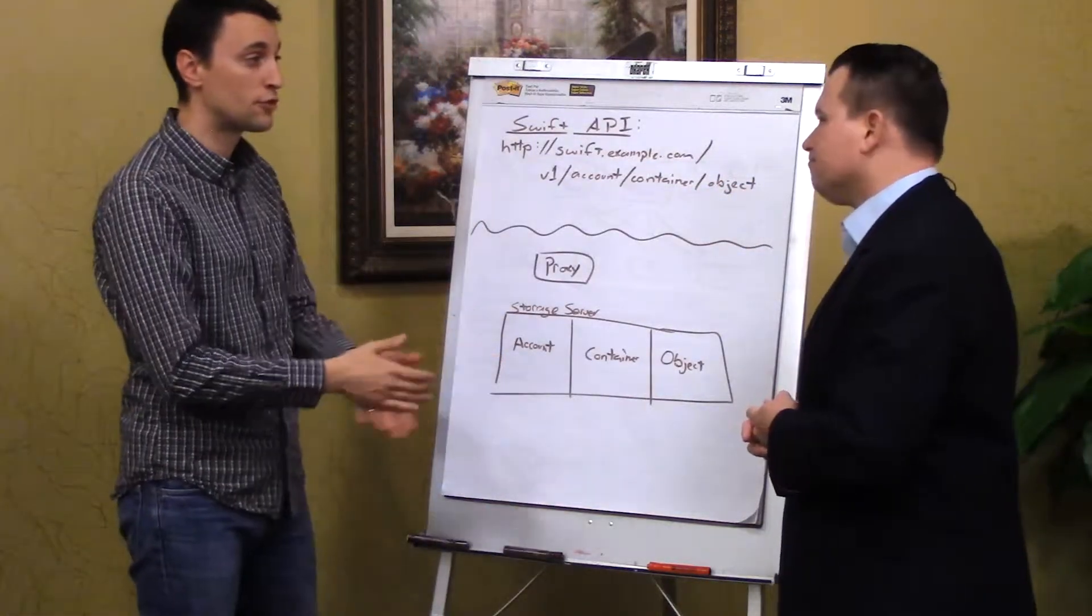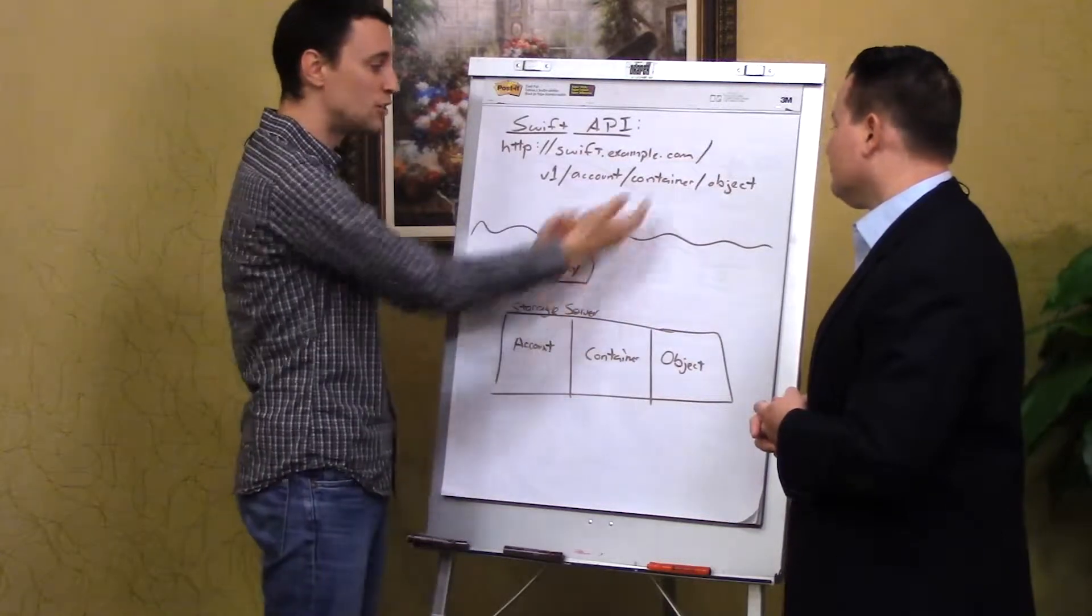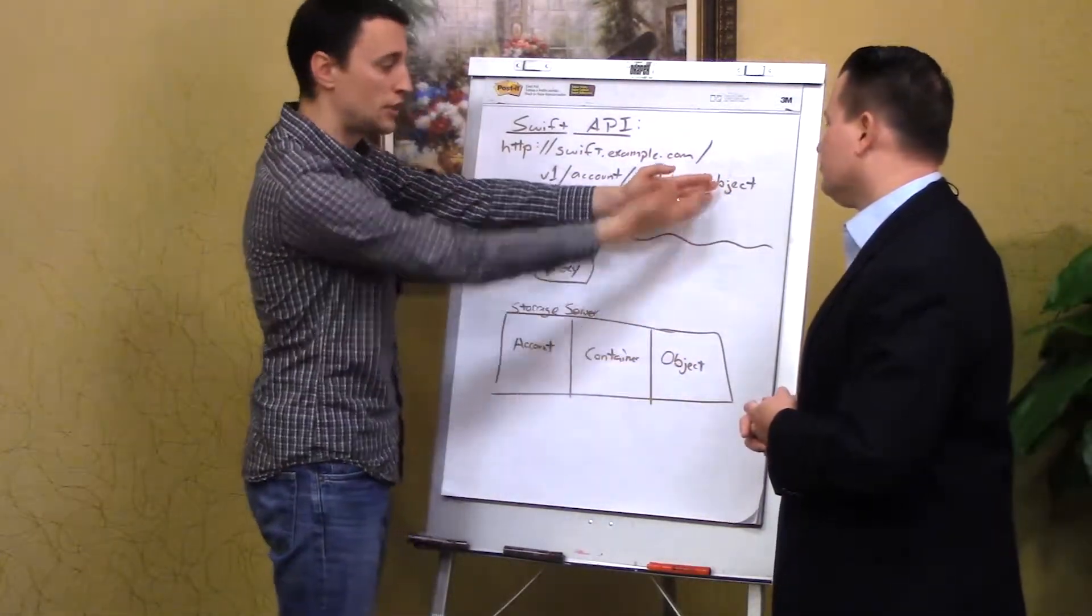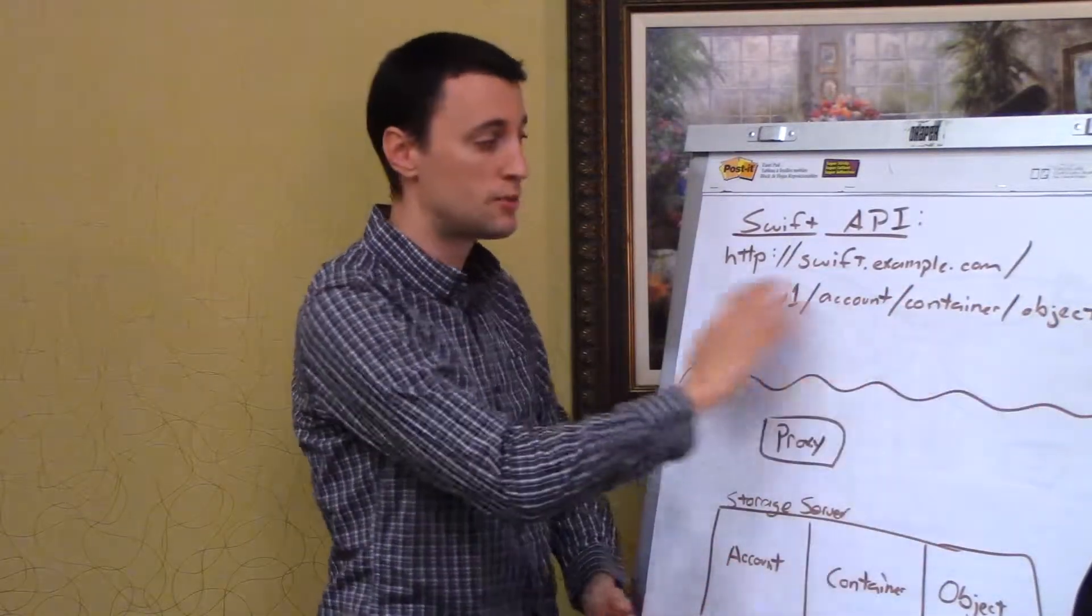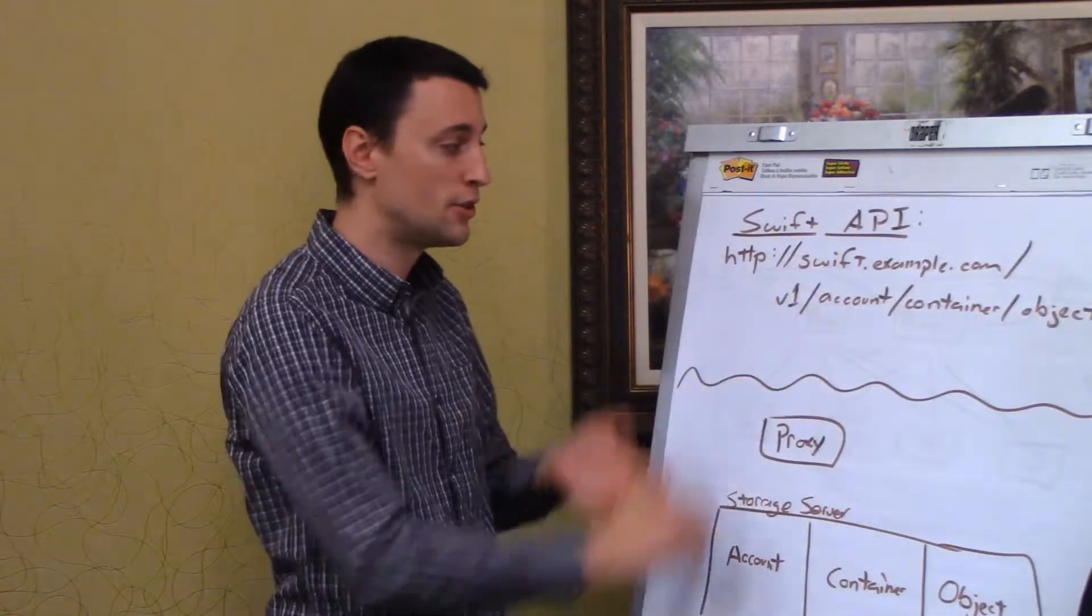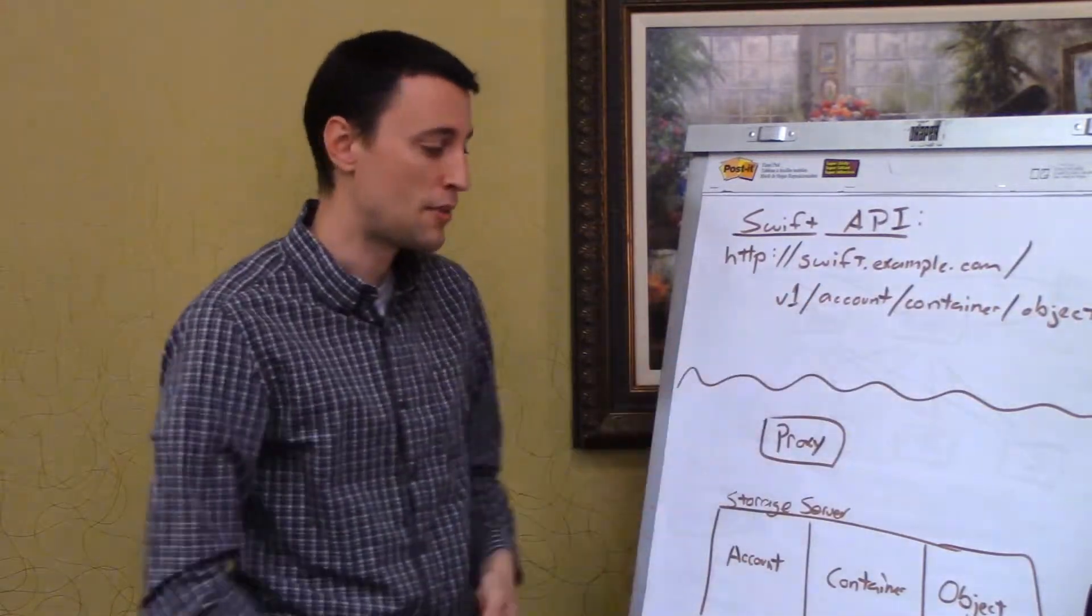Now all of these things can store custom metadata as well. So you could say this container was created on Tuesday, or it contains all of my applications for my Foobar app, or something like that. The object level is where the objects are actually stored. You don't nest accounts and containers, so it gives you a very flat namespace here. But the object is where your data is stored.